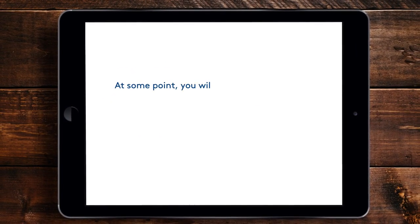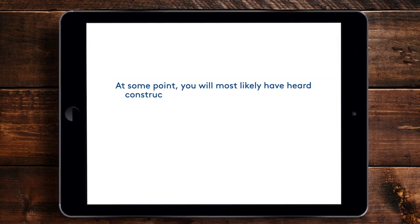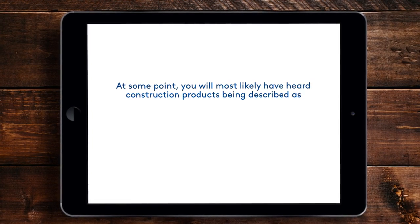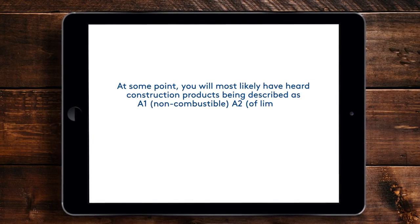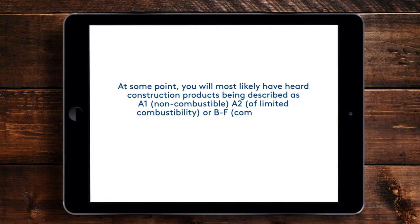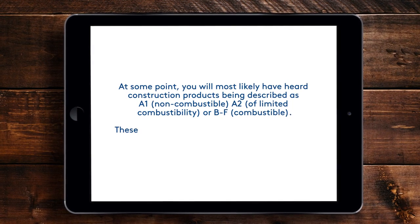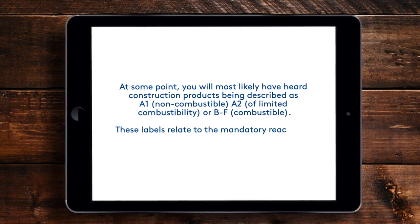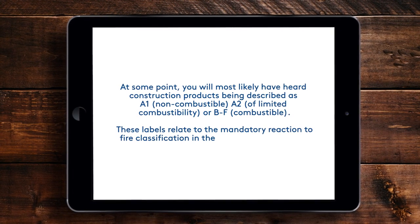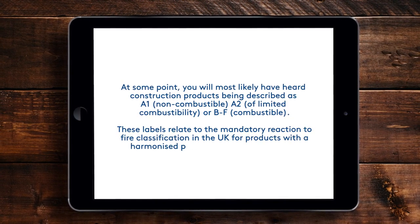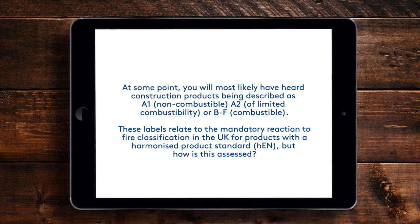At some point, you will most likely have heard construction products being described as A1, non-combustible, A2 of limited combustibility, or B2F, combustible. These labels relate to the mandatory reaction to fire classification in the UK for products with a harmonised product standard, HEN — but how is this assessed?